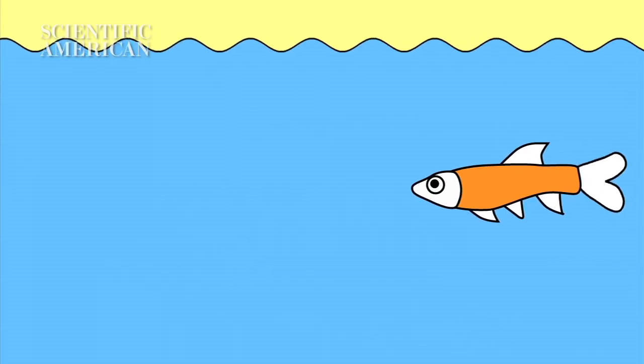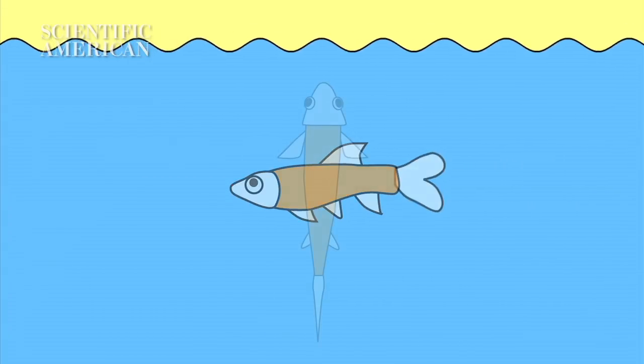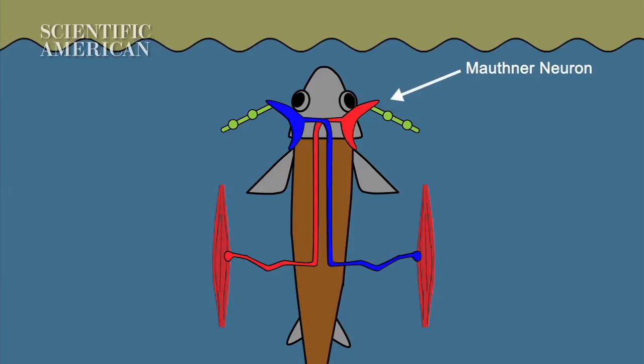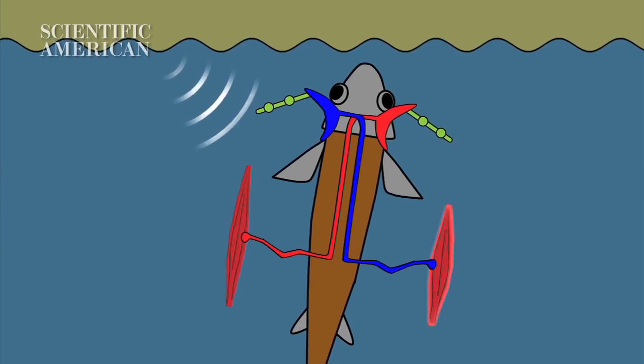The snake exploits a reflex that normally helps fish evade capture. Two large nerves on either side of the body, called Mauthner neurons, react to pressure waves and involuntarily cause the fish to move in the opposite direction.